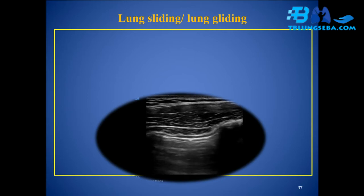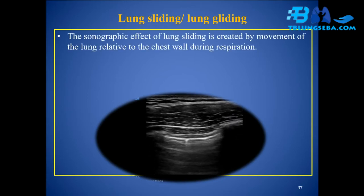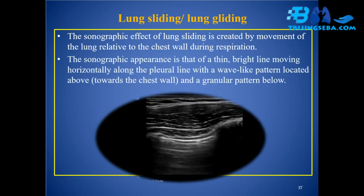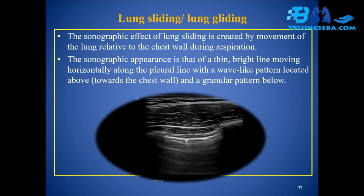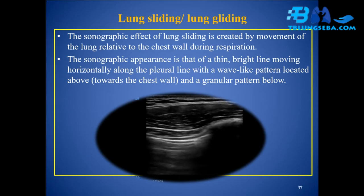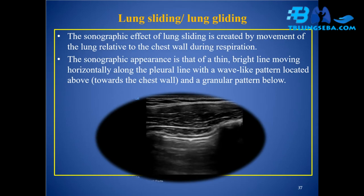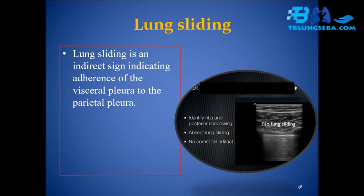Lung sliding / lung gliding: the sonographic effect of lung sliding is created by movement of the lung relative to the chest wall during respiration. The sonographic appearance is that of a thin bright line moving horizontally along the pleural line with a wave-like pattern located above (towards the chest wall) and a granular pattern below. Lung sliding is an indirect sign indicating adherence of the visceral pleura to the parietal pleura. When air separates the two pleural layers, as in a pneumothorax, the movement disappears.